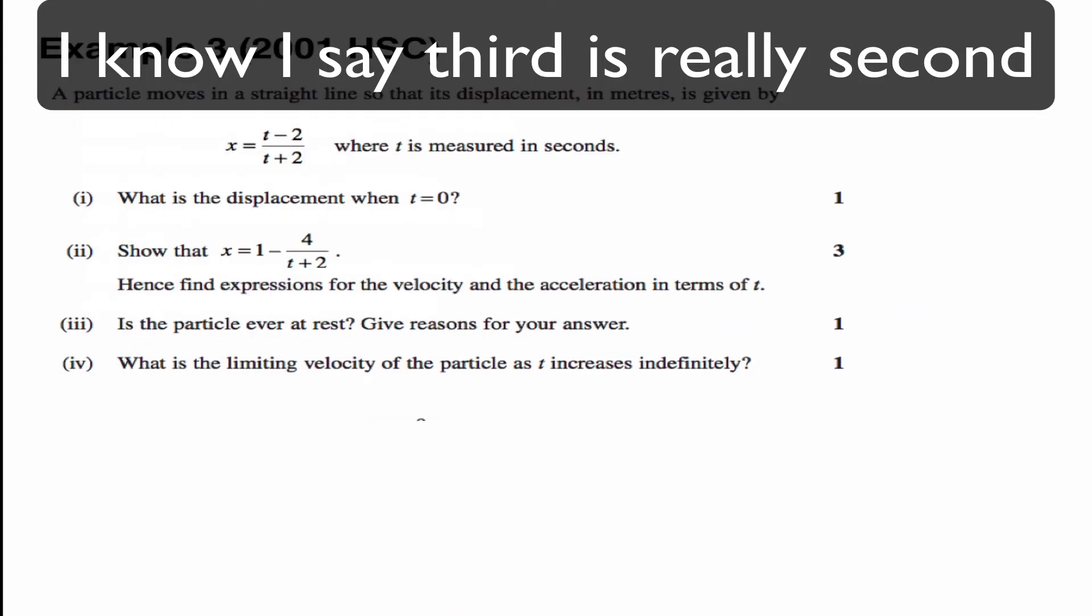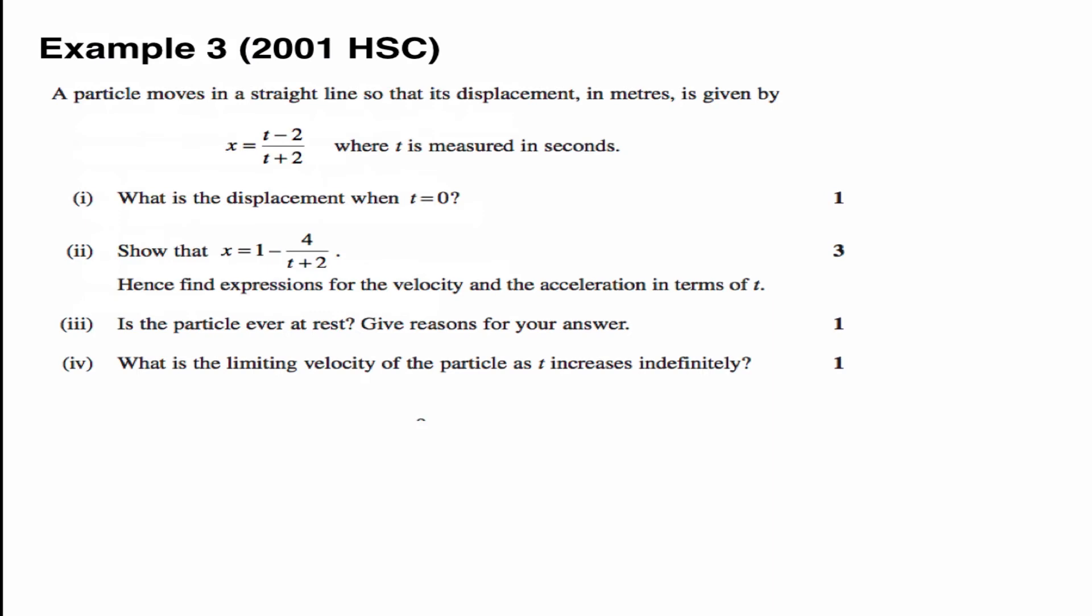So we'll move on now to our third example. We'll actually steal one from the 2001 HSC. A particle moves in a straight line so that its displacement in meters is given by the function x is equal to t minus 2 on t plus 2. What is the displacement when t equals 0? To find the displacement when t equals 0, we simply substitute t equal to 0 into our displacement function. And if we do that, we get x is equal to minus 2 on 2 or negative 1 and it's meters.